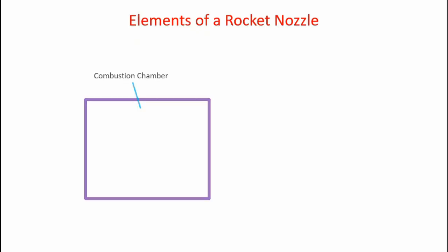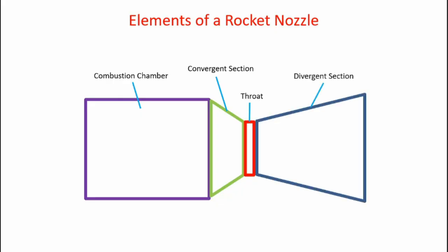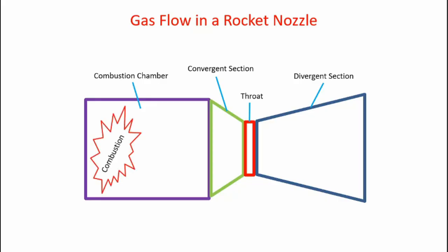So now let's take a look at the elements of a rocket nozzle. First of all, we have the combustion chamber. Next we have a convergent section. Now in the convergent section, the cross-sectional area of the nozzle decreases as we move towards the right. Next is the throat. It's a constant cross-sectional area and the narrowest part of the nozzle. And finally, we have a divergent section. This is also known as the exit cone.